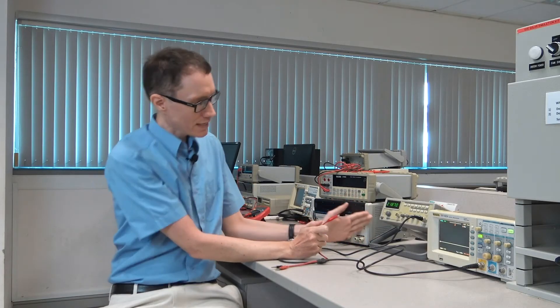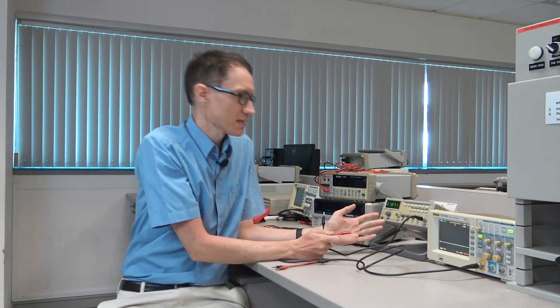Now the function generator in some sense does the opposite of what the oscilloscope does. The oscilloscope is a graphing unit, the function generator is a supply unit, and it's something like a DC voltage source except that it provides a time varying signal.